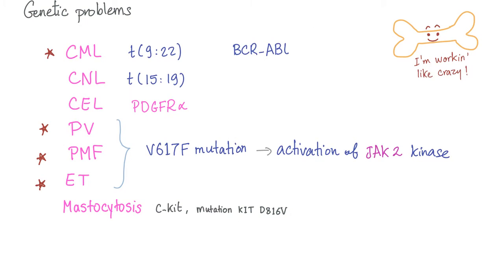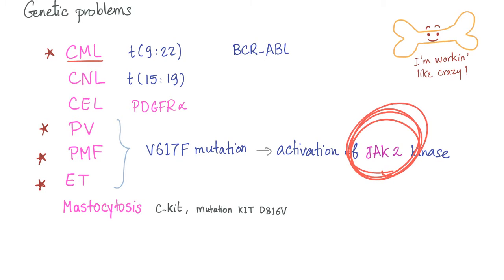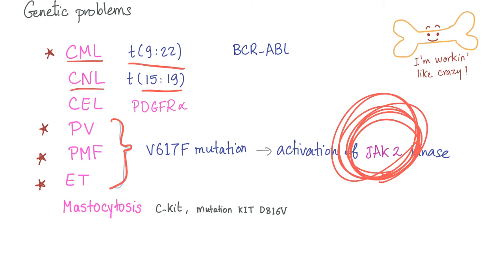Now the genetic problems in myeloproliferative neoplasm — your exam will love to ask about this. In CML, it's the 9;22 translocation, also known as the Philadelphia chromosome, due to fusion of BCR and ABL. CNL is t(15;19). CEL involves PDGFR-alpha — platelet-derived growth factor receptor alpha. Polycythemia vera, primary myelofibrosis, and essential thrombocytosis share the V617F mutation leading to activation of JAK2 kinase. Mastocytosis involves a C-KIT mutation.